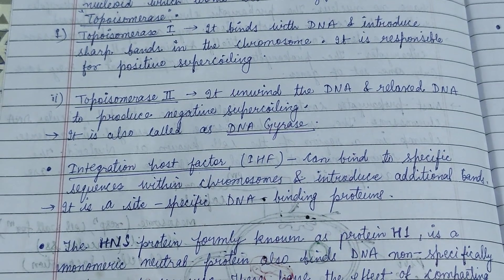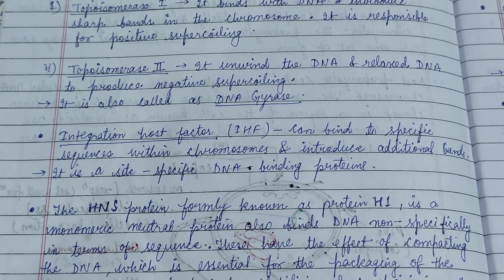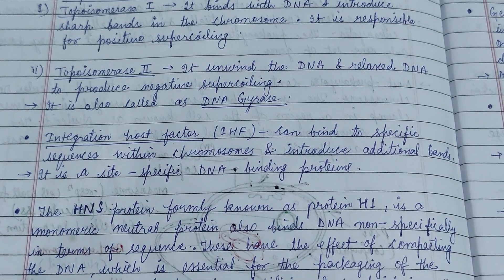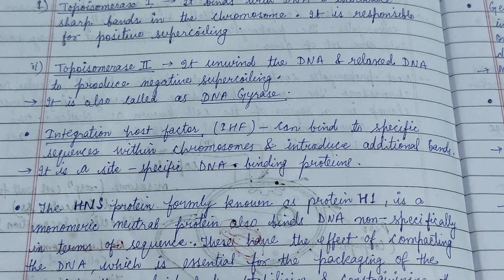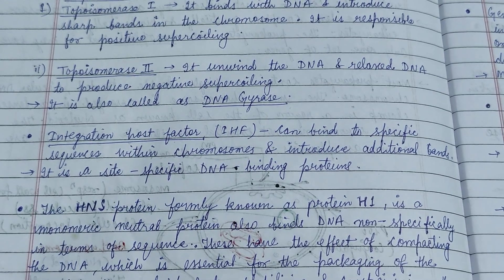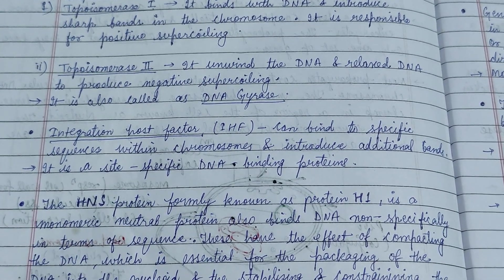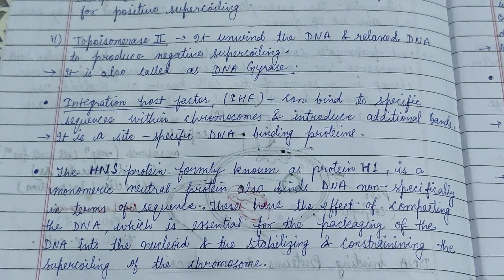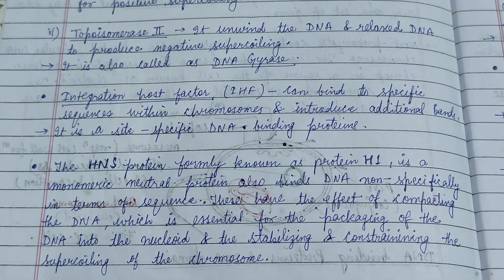Topoisomerase 1 binds to the DNA and introduces sharp bends in the chromosome, and it is responsible for positive supercoiling. As we know, the DNA is negatively supercoiled around the helix in position.